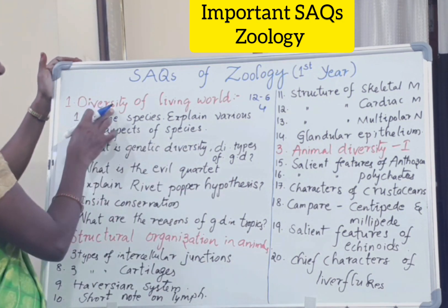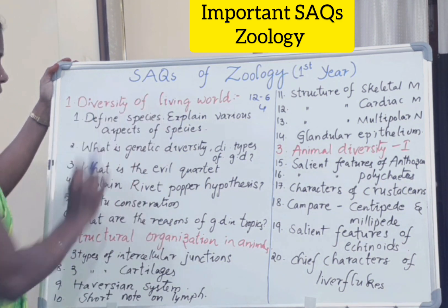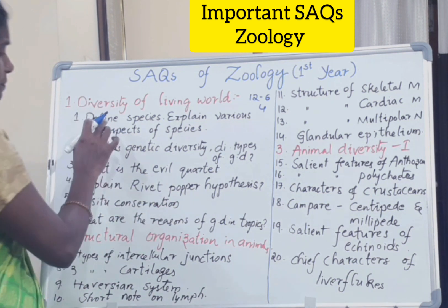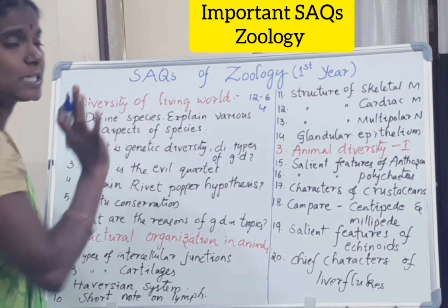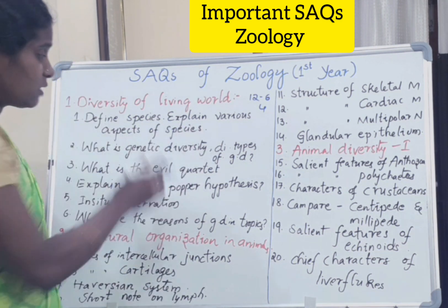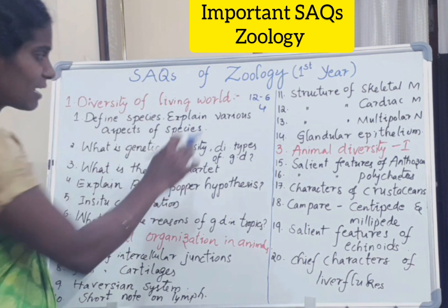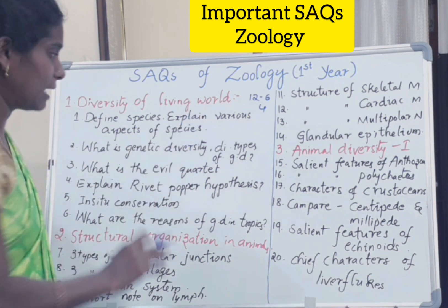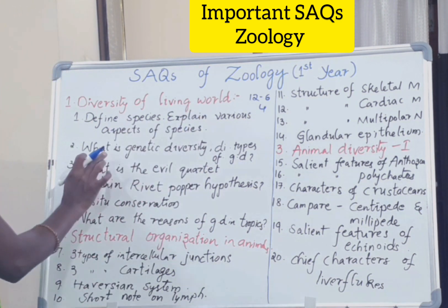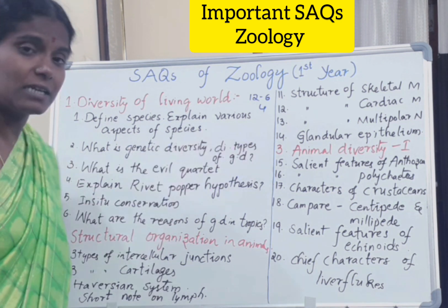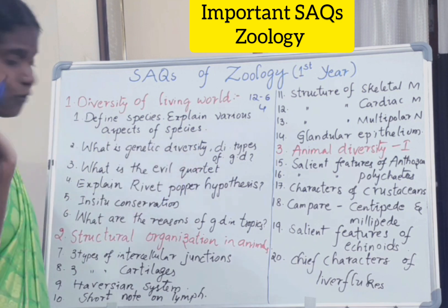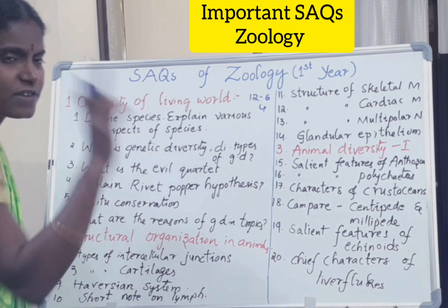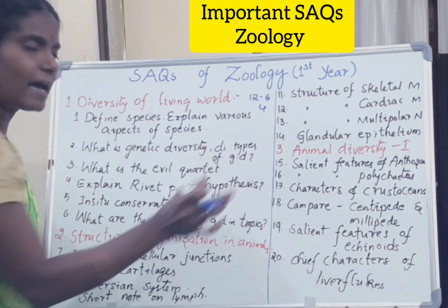The first chapter is Diversity of Living World. From this chapter there are 6 important questions. First: define species and explain various aspects of species — the scientist's definition carries 1 mark and the explanation about the scientist's role and units of species carries 3 marks. Next: what is genetic diversity and its different types — that carries 4 marks, with the definition carrying 1 mark and the remaining answer carrying 3 marks.